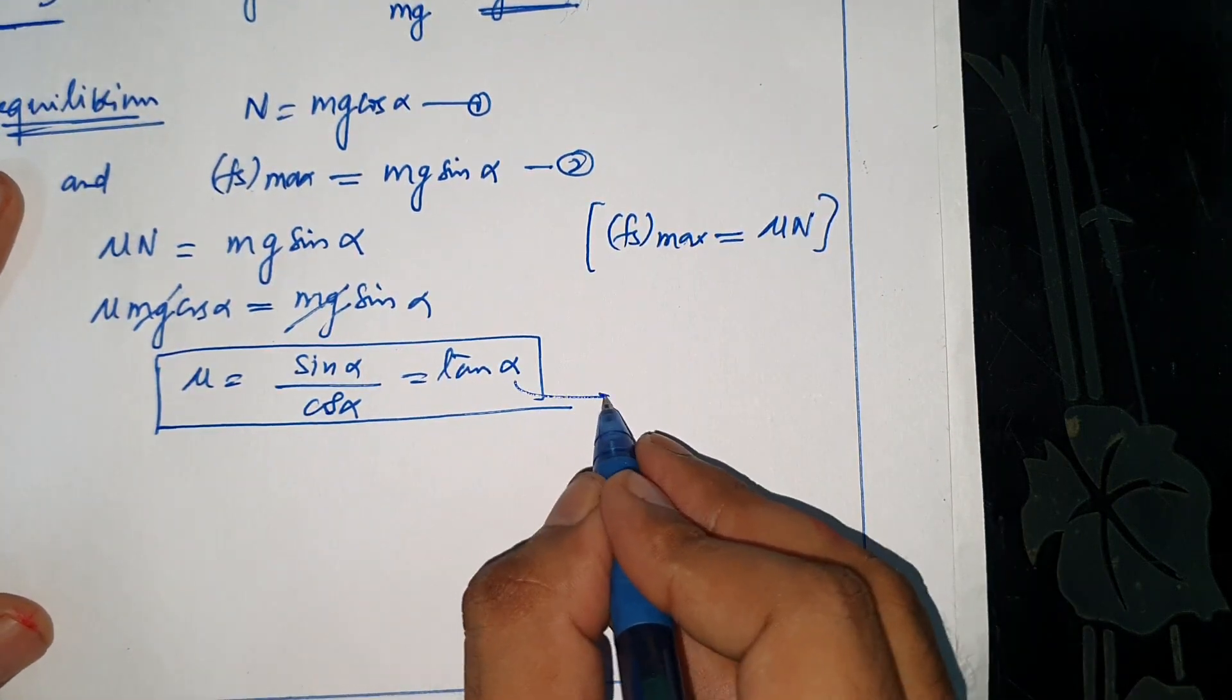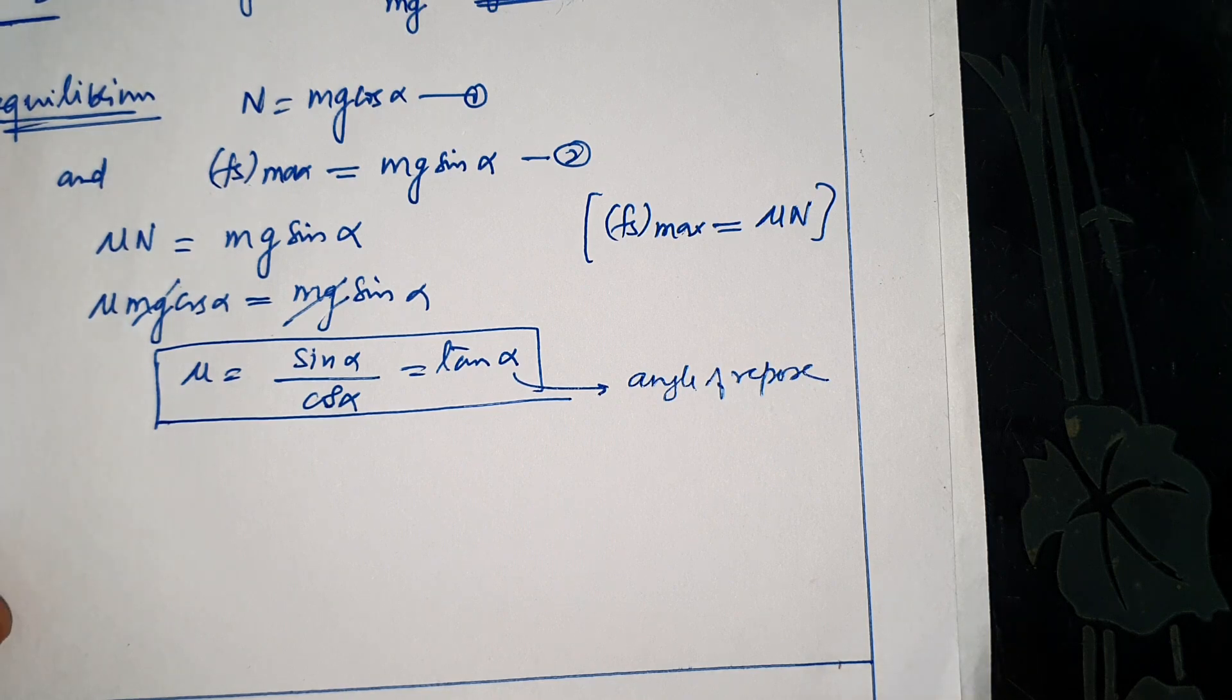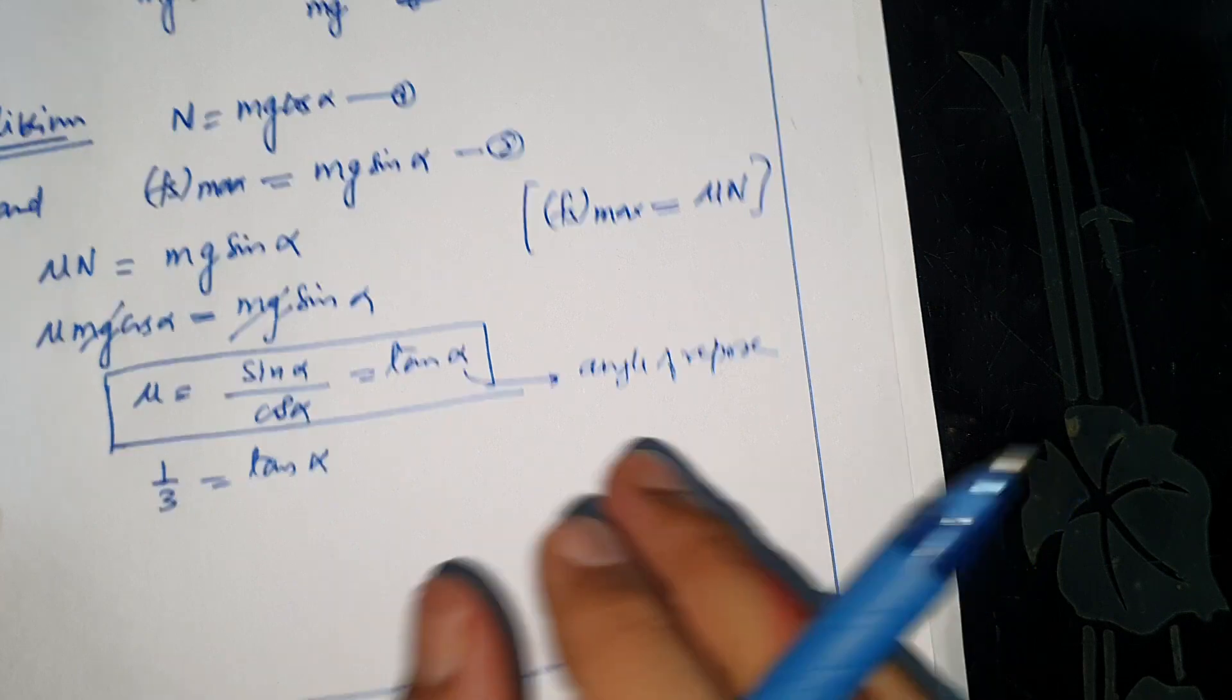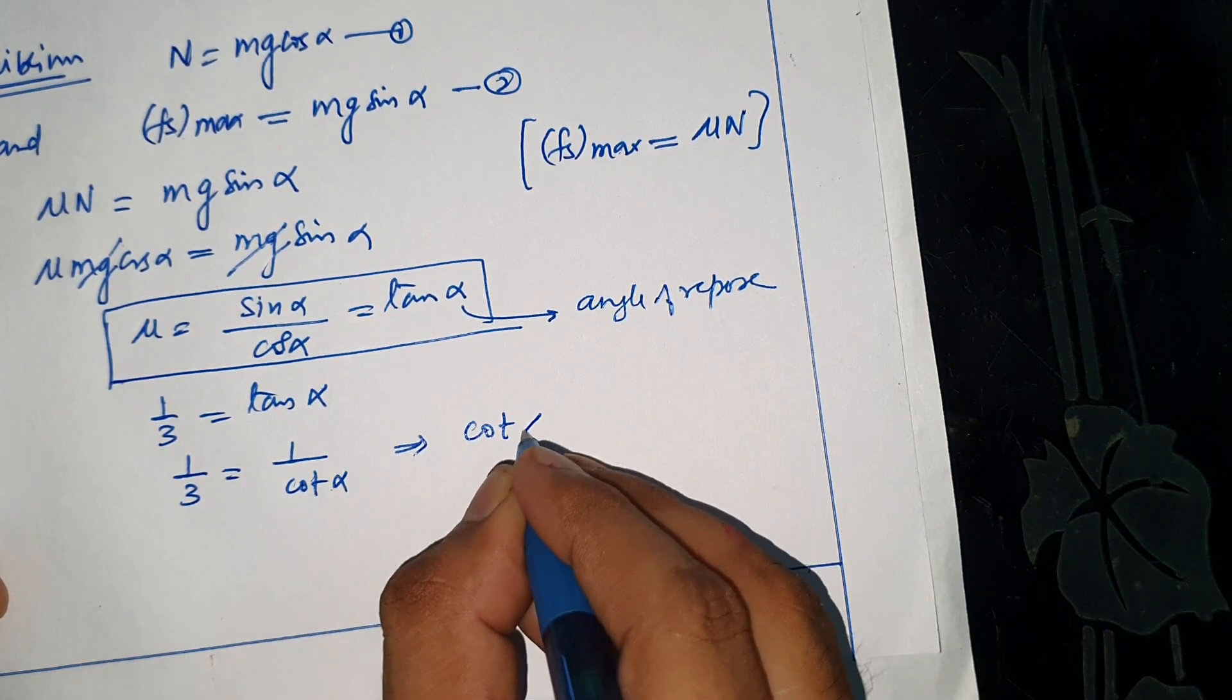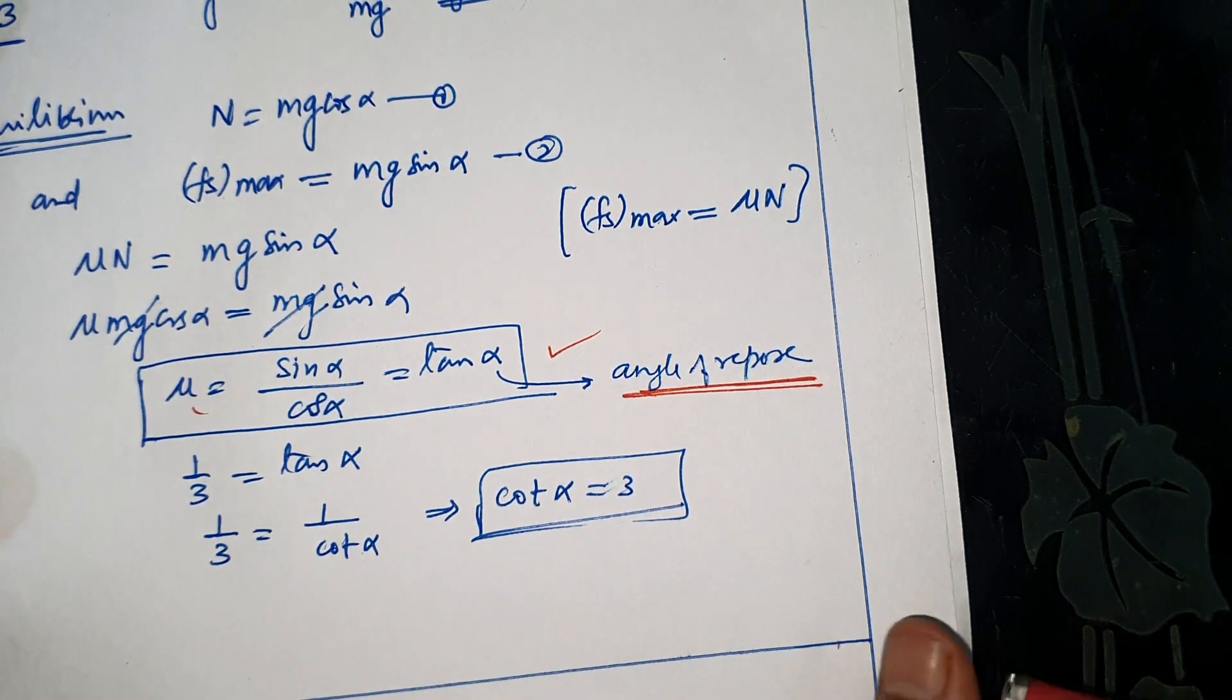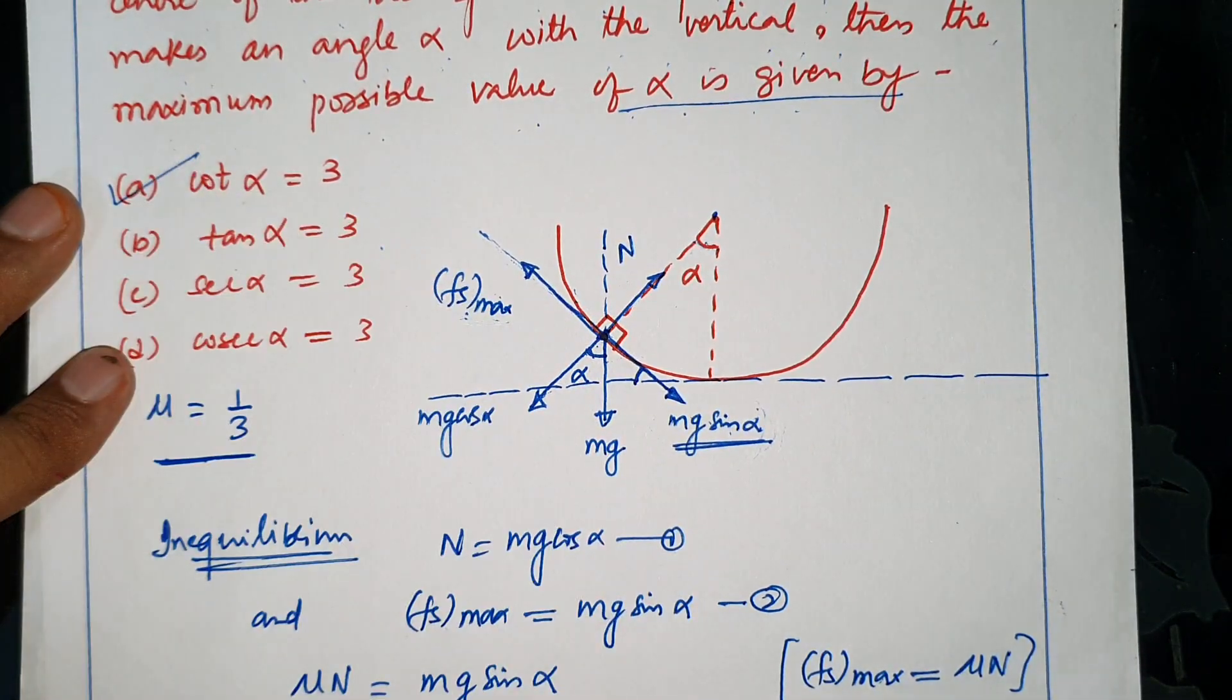And this is angle of inclination, so fs maximum and mg sin alpha balance. So here alpha is angle of repose and mu is equal to tan alpha. So tan alpha is equal to mu, and you can read and enjoy. Thank you.